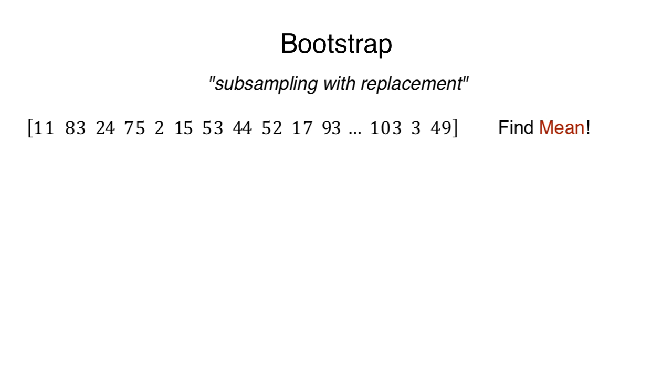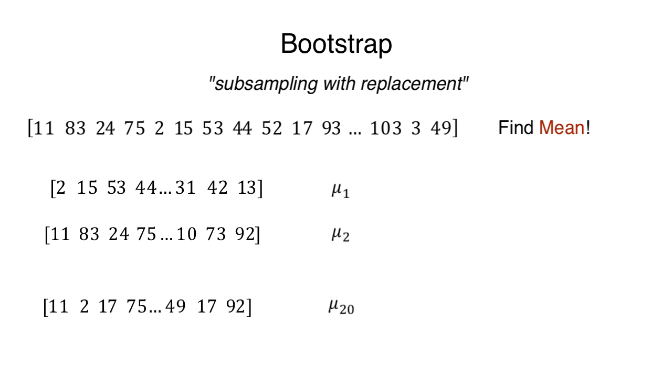However, with bootstrapping, we pick a subsample size, say some 30 samples. We find the mean of these 30 samples and call it mu1. Now put these 30 samples back into the pile and pick another random 30 samples and find that mean. Let's say it's mu2. We keep repeating this sampling with replacement for say 20 times, and we end up with 20 means. In the end, we take the mean of these means, and that is the final answer: the bootstrapped mean.